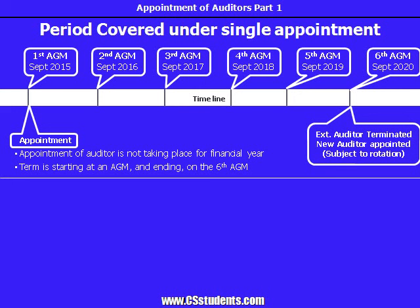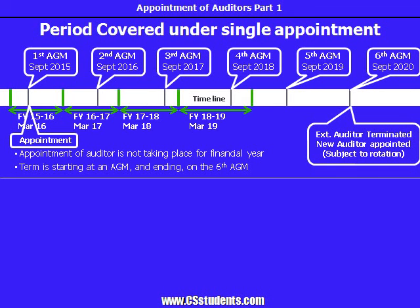The auditors are going to review the accounts for financial year appointment. So if the auditor is appointed in September 2015, he will first audit the accounts for the financial year ended March 2016, then also for March 2017, and similarly for March 2018, 2019, and March 2020. And in September 2020, in the sixth AGM, the auditor will cease to hold office, and a new appointment shall take place.